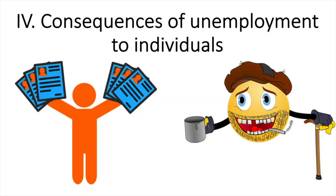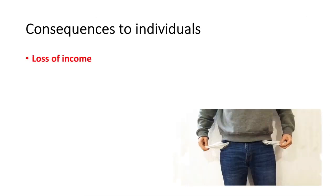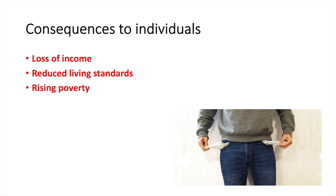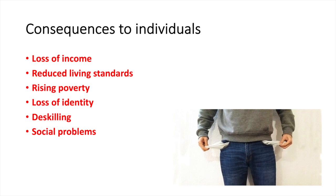Finally, let's look at the consequences of unemployment to individuals. First and foremost is the loss of income — after losing their jobs, workers lose their employment income and will likely have reduced living standards. For lower income earners, this may push them into poverty. For many workers, their job is a source of identity, and losing it could have psychological consequences as well. If an individual is unemployed for a long period of time, their skills may suffer and will not remain up to date — a process called de-skilling, which has further implications for the economy as a whole. With no work and a loss of income, social problems may arise as some turn to crime, and domestic violence and substance abuse may arise if the psychological effects of unemployment are severe.